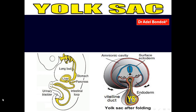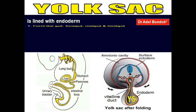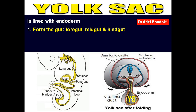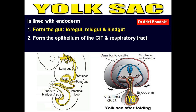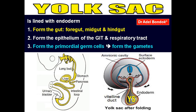The yolk sac is lined by endoderm. After folding, it forms the gut — foregut, midgut, and hindgut. The endoderm of the yolk sac forms the epithelium of the gastrointestinal tract and respiratory tract. It also forms the primordial germ cells, which give rise to the gametes — spermatogonia and oogonia.